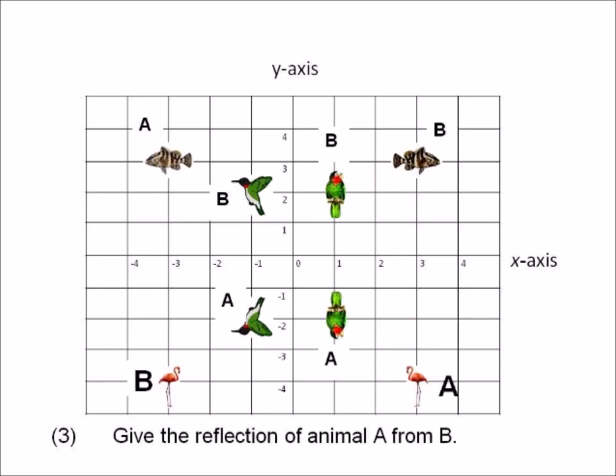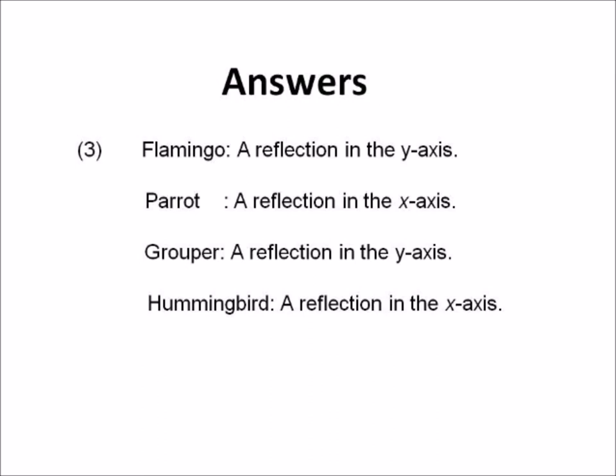Number three: give the reflection of animal A from animal B. We have the grouper A and B, the hummingbird A and B, the parrot A and B, and the flamingo A and B. You have to say it's a reflection in the x-axis or in the y-axis. Here are your answers: the flamingo was a reflection in the y-axis, the parrot was a reflection in the x-axis, the grouper a reflection in the y-axis, and the hummingbird was a reflection in the x-axis.